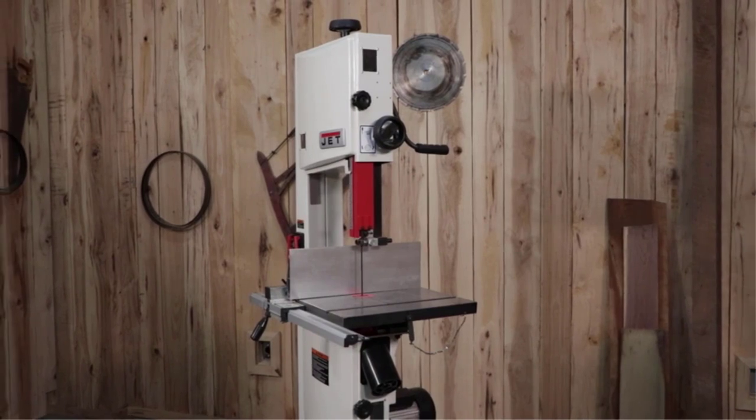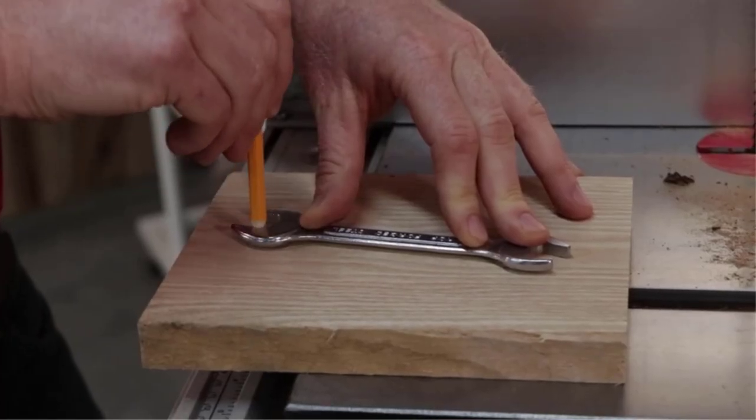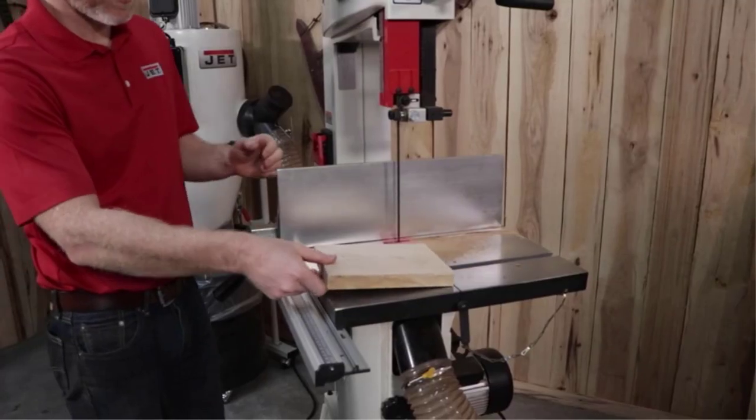Moreover, it has two 4-inch dust ports with wide compatibility, while the aluminum fence will ensure material guidance while keeping your work area visible. It also has ball-bearing blade guides for smooth operation.